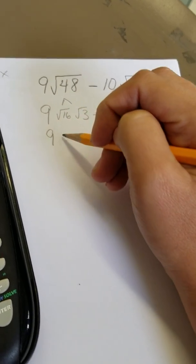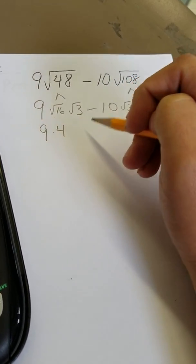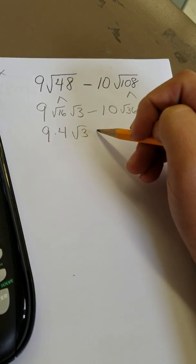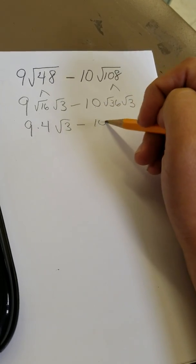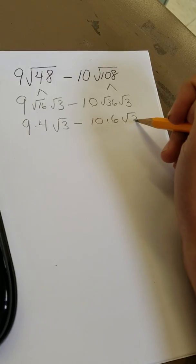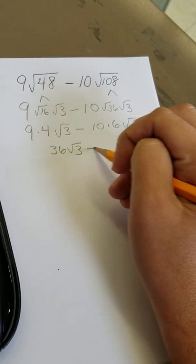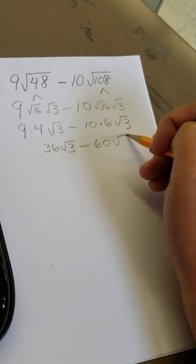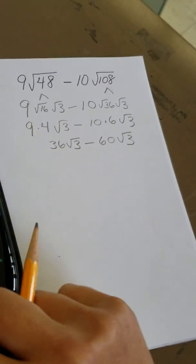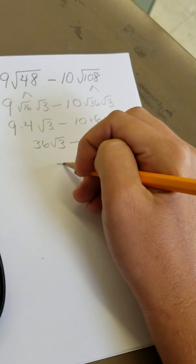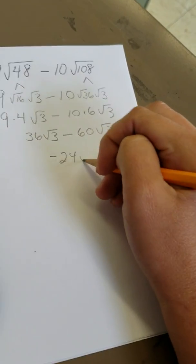I'm going to pull them out here now in the next step. I have 9 times 4 times radical 3 minus 10 times 6 times radical 3. So 36 radical 3 minus 60 radical 3. And 36 minus 60, make sure I'm sure.